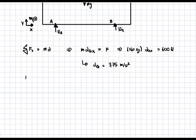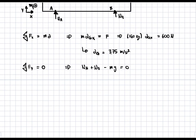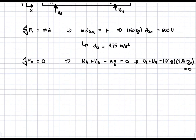Next, we take the sum of forces in the y direction and equate everything to zero, because there is no acceleration in the y direction. Going back to the free body diagram: Na plus Nb minus mg equals zero. Plugging in values: Na plus Nb minus 160 kilograms times 9.81 meters per second squared equals zero. We can't solve for Na or Nb individually yet since both are unknown, so this becomes our first equation. Our second equation will come from the sum of moments — two equations, two unknowns.